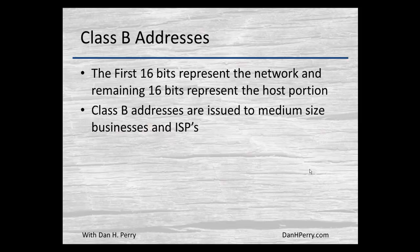Class B addresses are basically split down the middle. The first 16 bits are the network number and the remaining 16 bits are for the host. They are traditionally assigned to medium-sized businesses, maybe larger universities, or smaller ISPs.